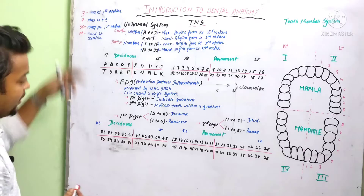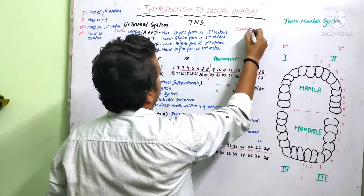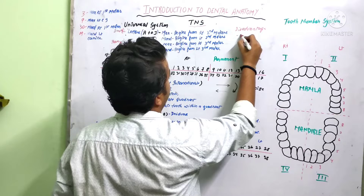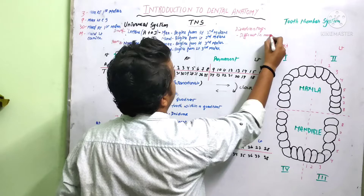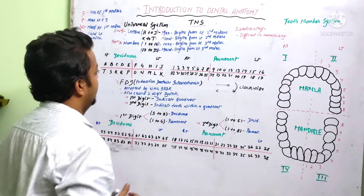That is how we write tooth notation in the Universal system. The disadvantage of the Universal system is that it is very difficult to memorize, which makes it not practically possible for easy use.